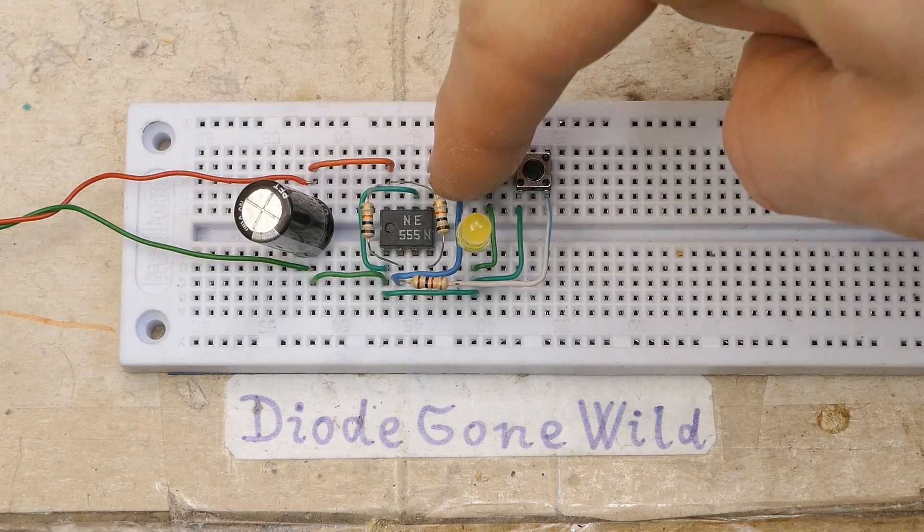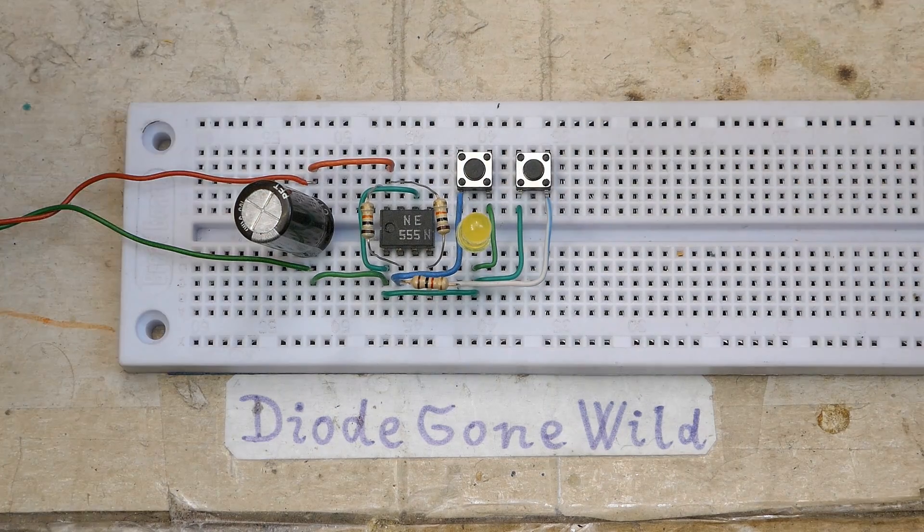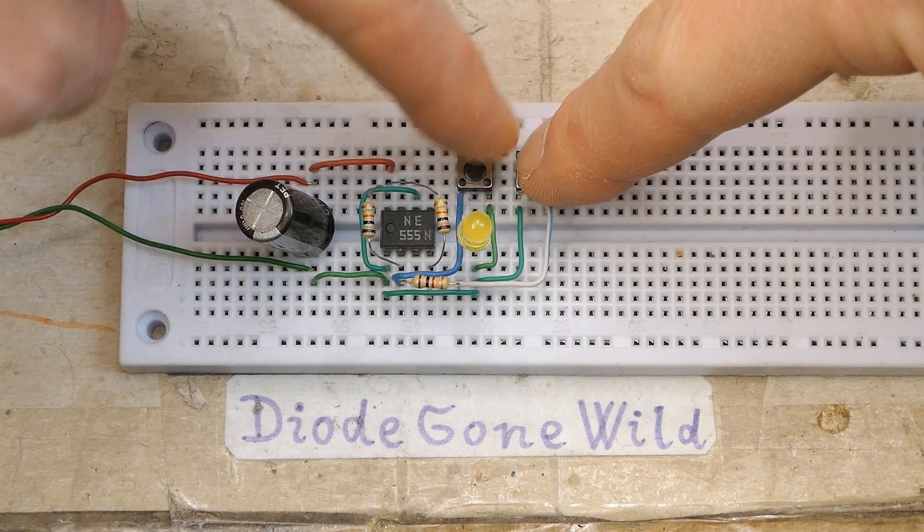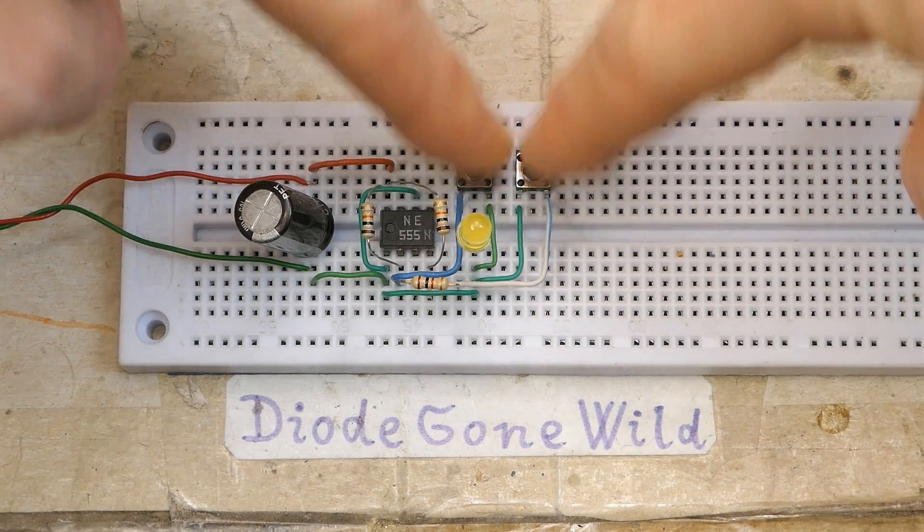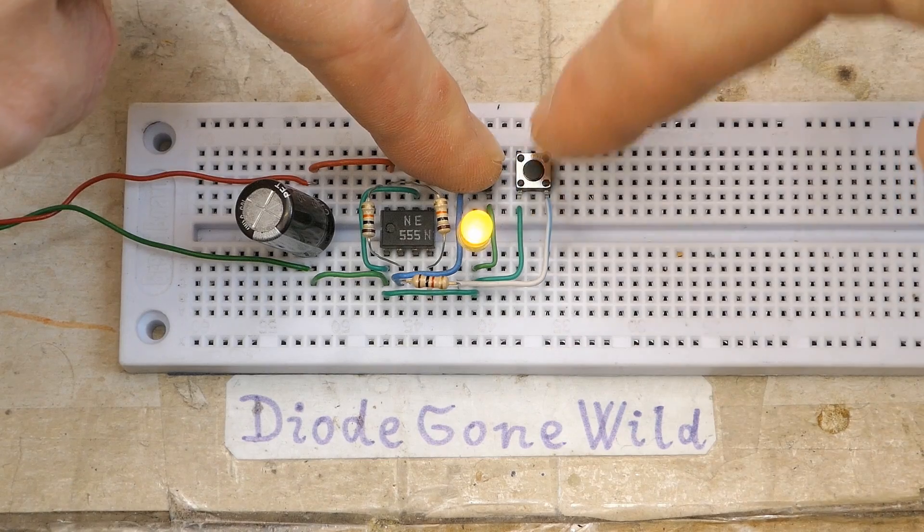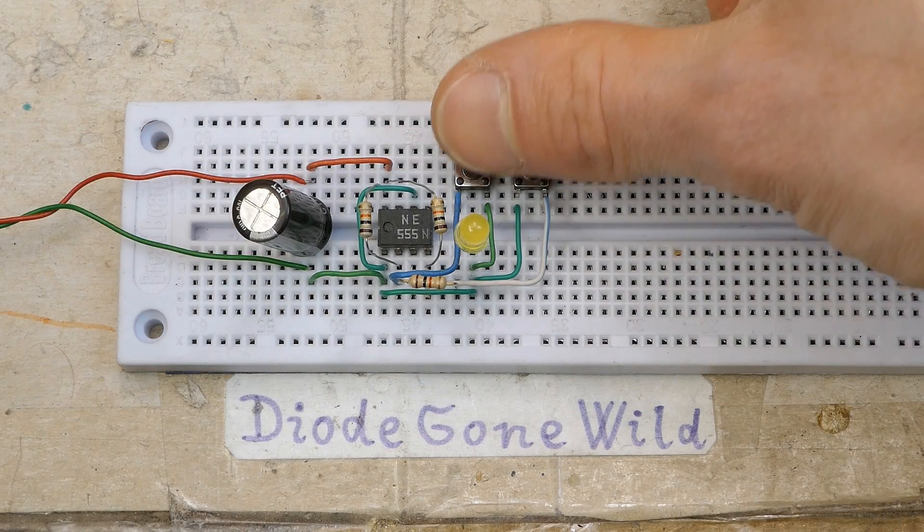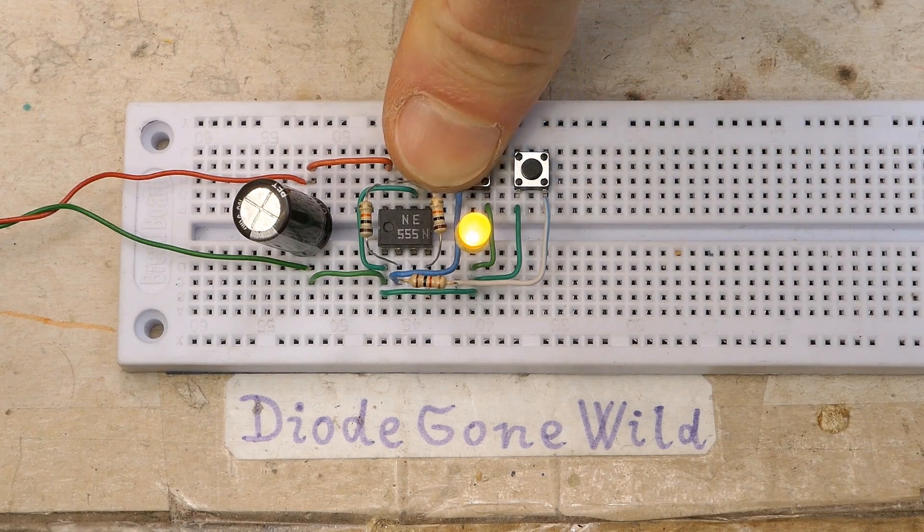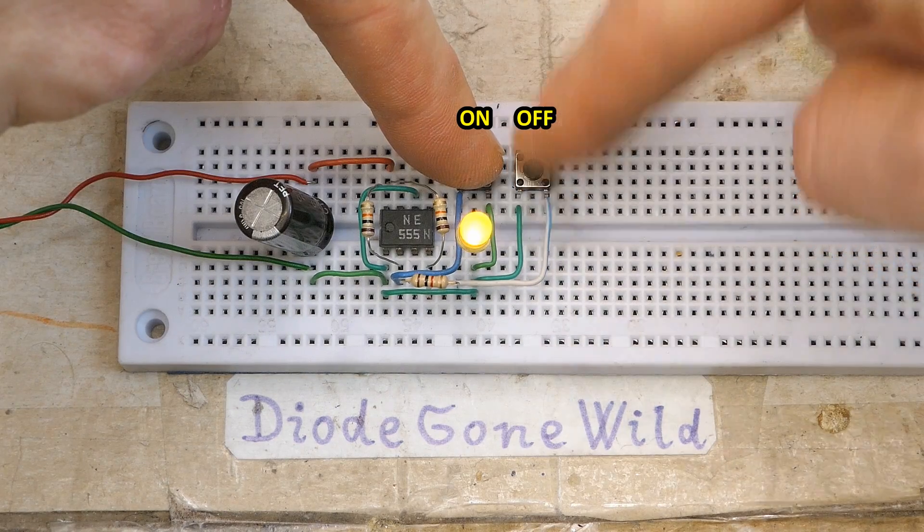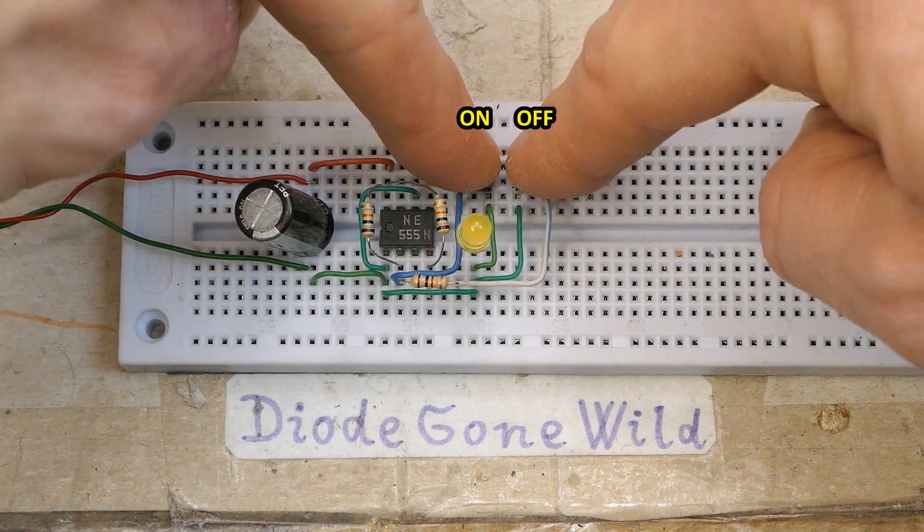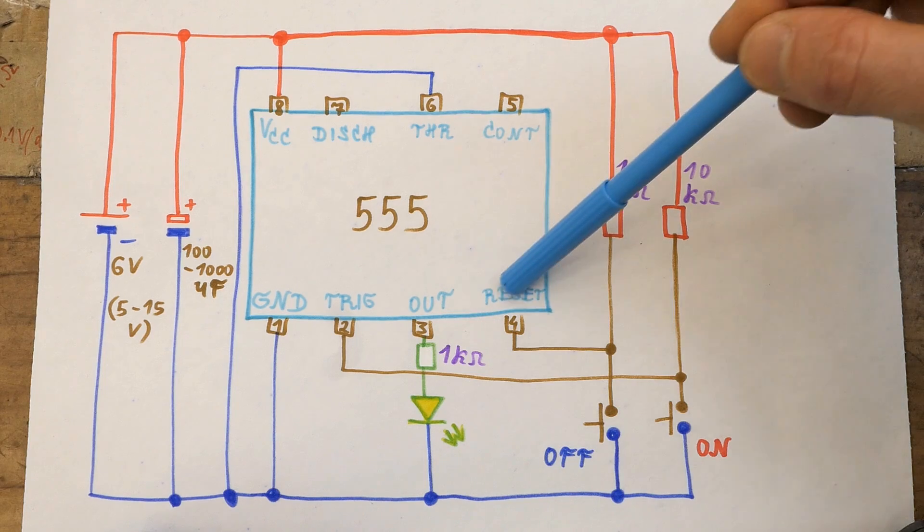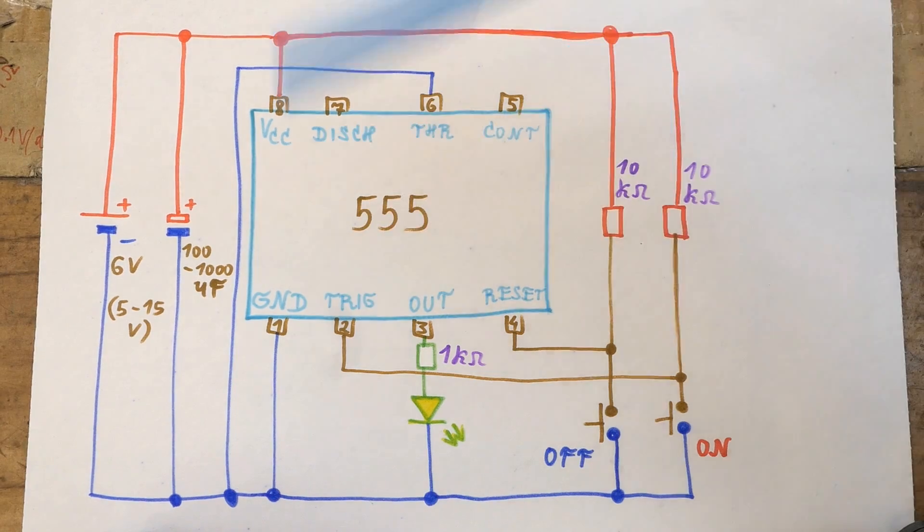And of course somebody's probably asking what happens if I press both buttons at the same time. And it's actually off. And it stays off unless the off button is released first and then the on button. If I release the on button second it will be on. If I release the off button second it will be off. And the reset input is a priority over the trigger input. And that's why the LED is off when I hold both buttons.